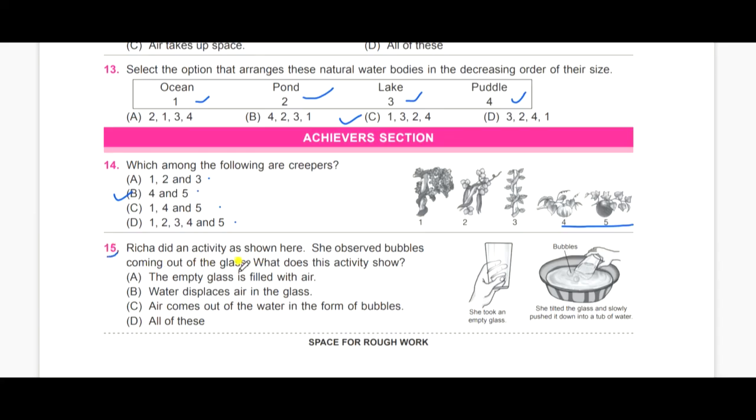Fifteenth one. Preacher did an activity as shown here. She observed bubbles coming out of the glass. What does this activity show? A, the empty glass is filled with air. B, water displaces in air in the glass. C, air comes out of the water in the form of bubbles. D, all of this. The answer is D, all of this.